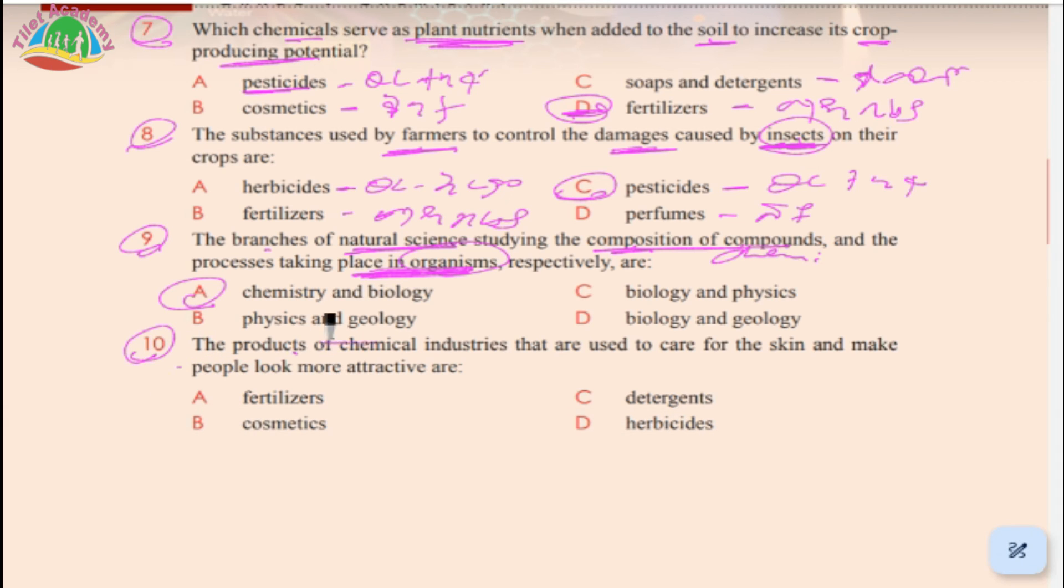The product of chemical industries that are used to care for the skin and make people look more attractive: A. fertilizer, B. cosmetics, C. detergent, D. herbicide. Fertilizer is for land, detergent is soap, herbicide is for plants. The answer is B, cosmetics - cosmetics are used for skin care and beauty.